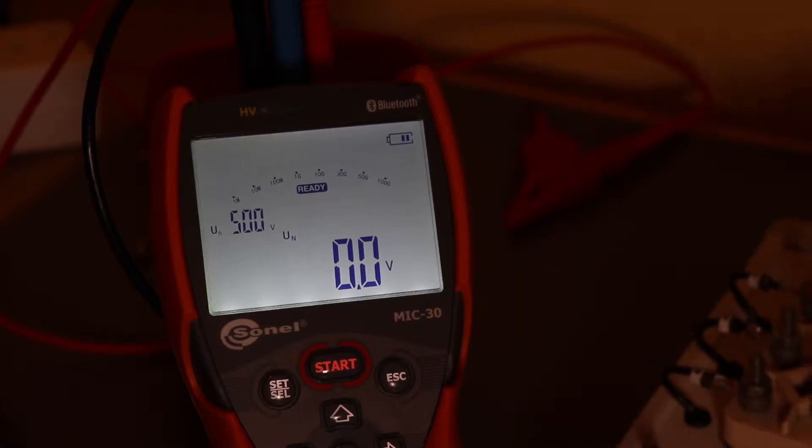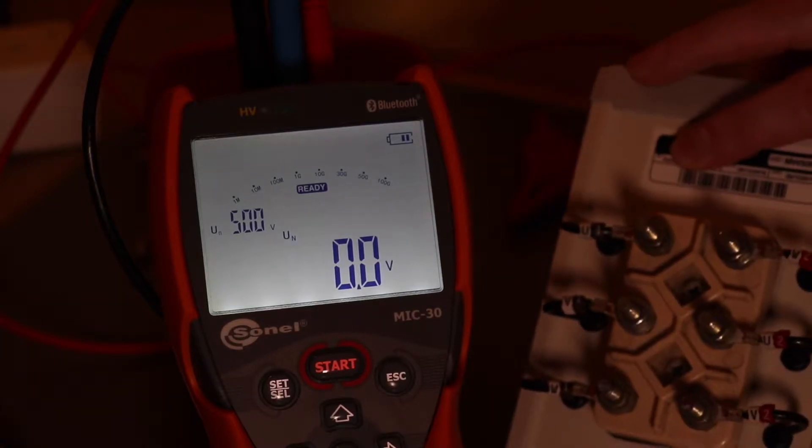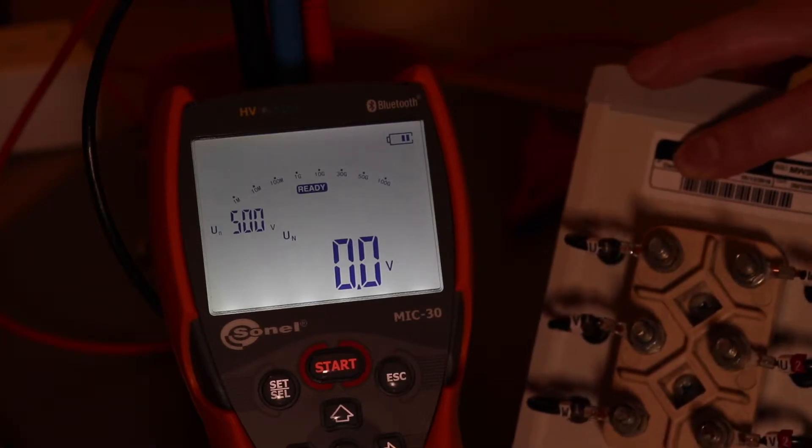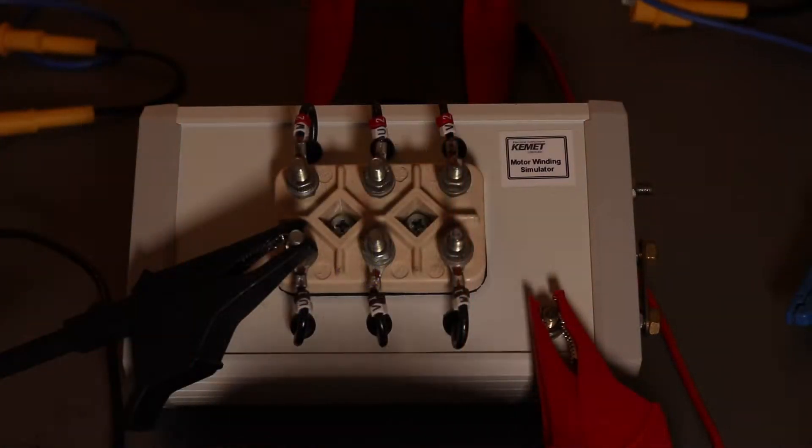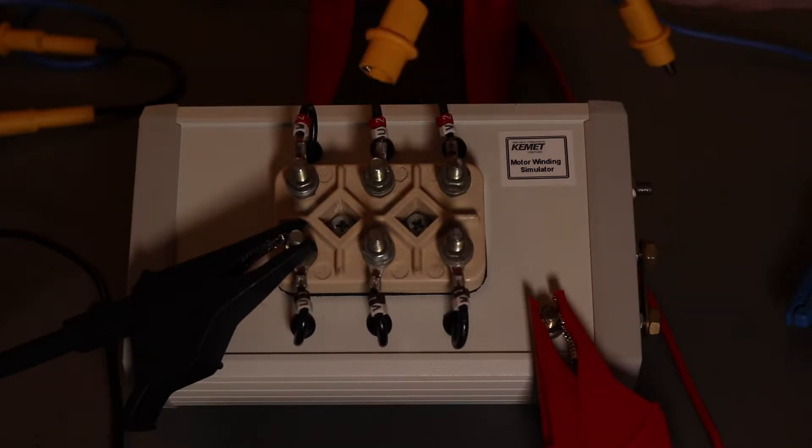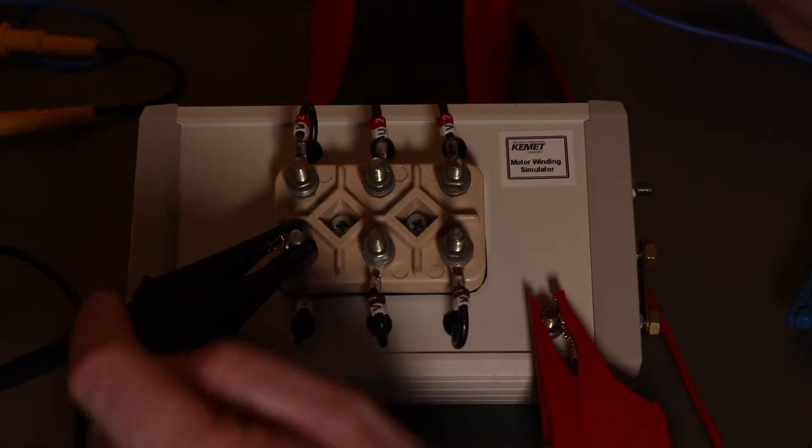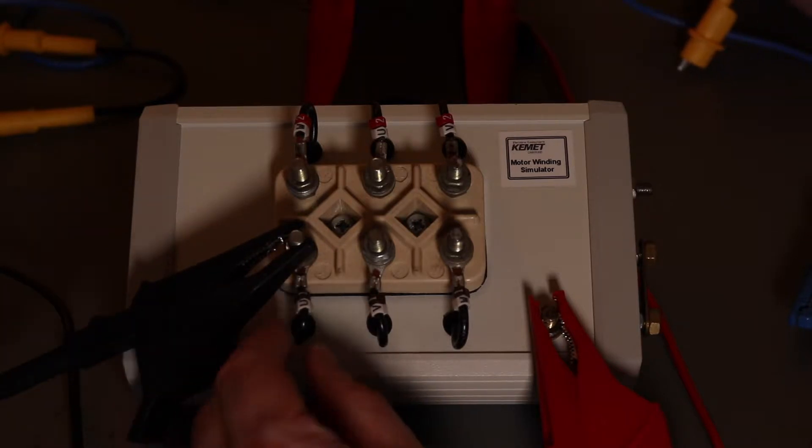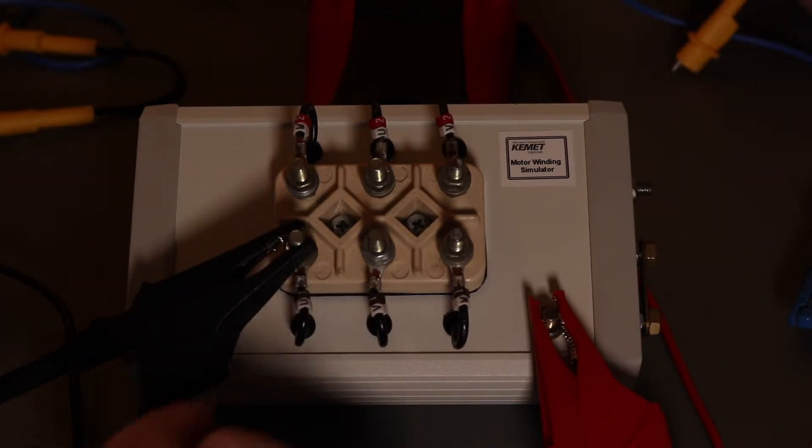In this video I'm going to demonstrate the use of the guard terminal on the Sonel MIC30 to take away leakage from the winding simulator. I'll demonstrate two different test configurations when using the guard terminal on an insulation tester. It's quite unusual for a 1000 volt installation tester to have a guard terminal. Generally you would use it with a shielded test lead connected into the guard to remove any leakage between leads. But if you had a more expensive motor and you wanted just a true reading from the phase under test to earth, you could use the guard terminal to do that.